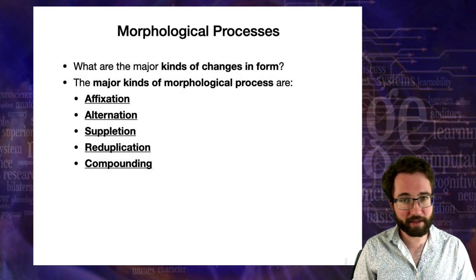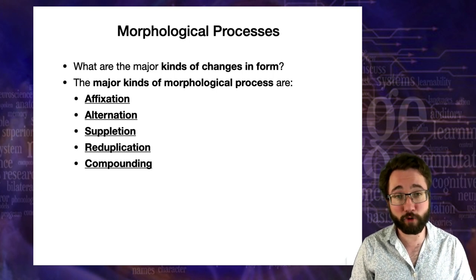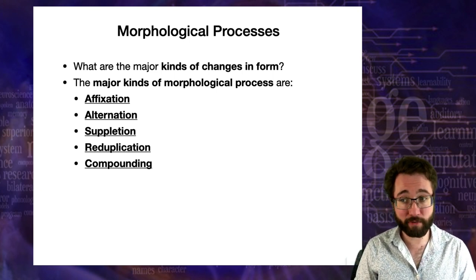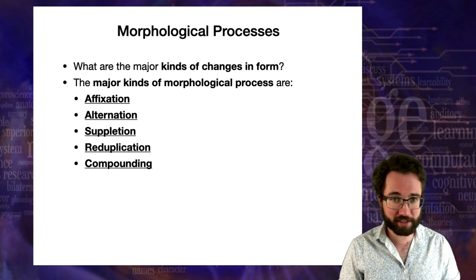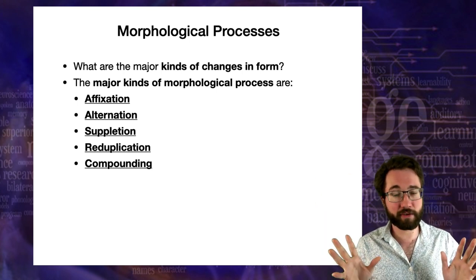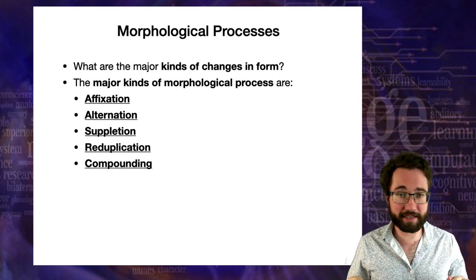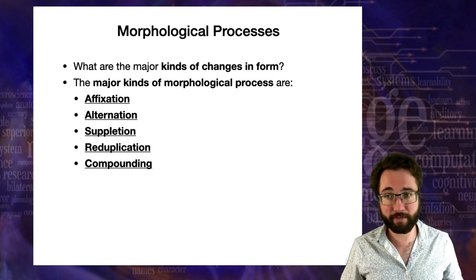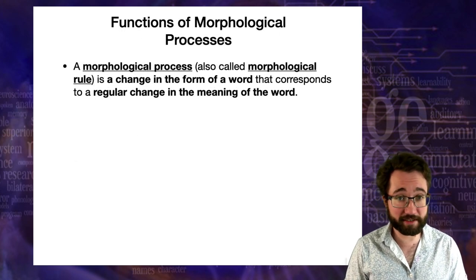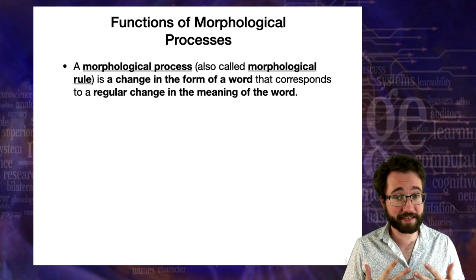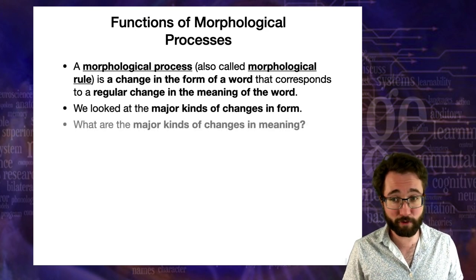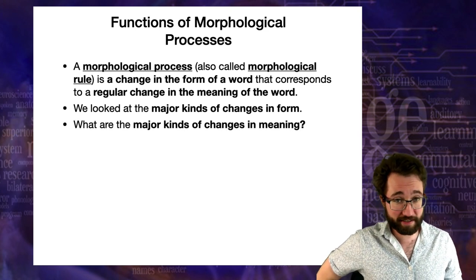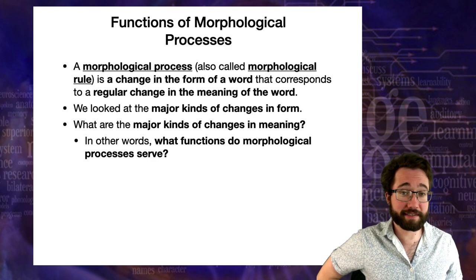Those are the major kinds of morphological processes in terms of form: affixation, alternation, suppletion, reduplication, and compounding. But remember, in morphology there's always form and meaning — two sides. Now we need to look at how morphological processes express gradations in meaning, which means looking at the functions of morphological processes. The function refers to how the meaning changes when the form changes in a certain way.